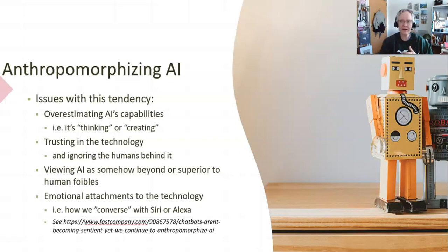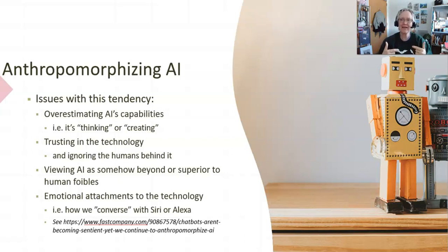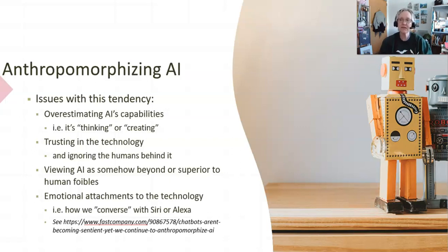When I talk about emotions with AI, that leads us to the big elephant in the room: as humans, when we are talking with something that is talking back to us, we tend to think of it as a human. We anthropomorphize it — we try to turn it into a person — which has some real drawbacks when dealing with AI. I talk to my computer all the time, we all sort of yell at our phone. But what this does with AI is leads us to overestimate what AI can do. We even talk about how AI thinks or creates — it doesn't do either of those things. It scans data and it matches patterns. That is not thinking or creating in the way that humans do it.